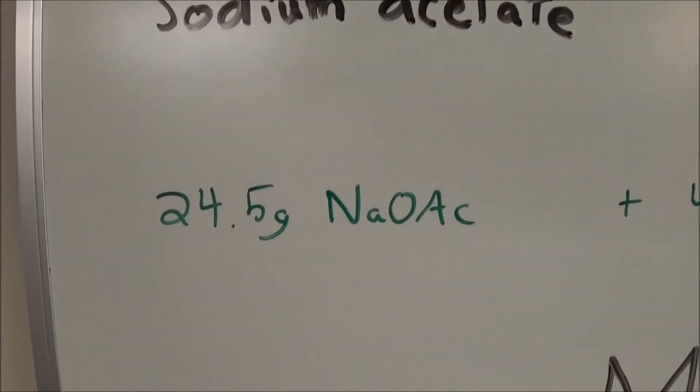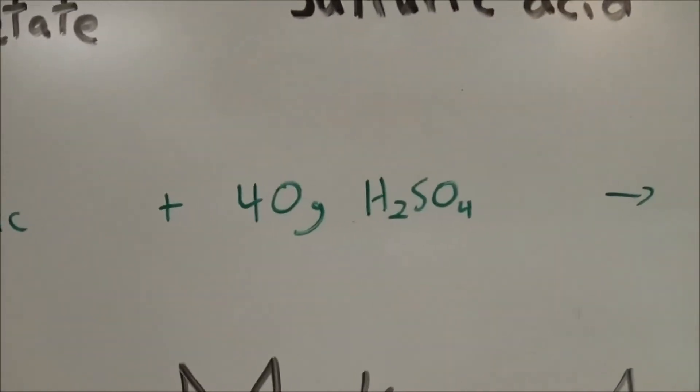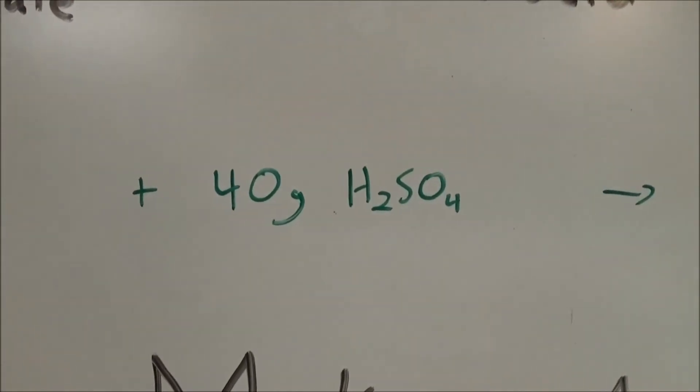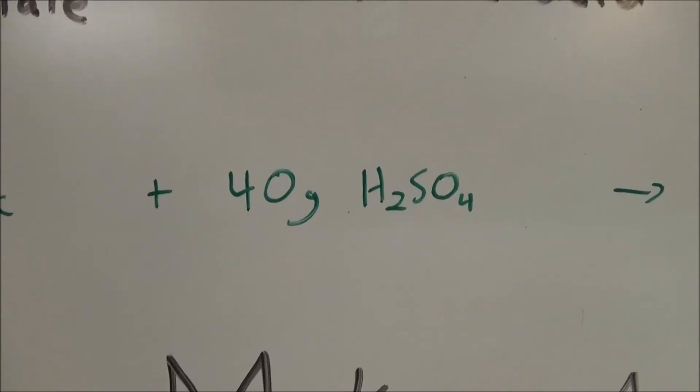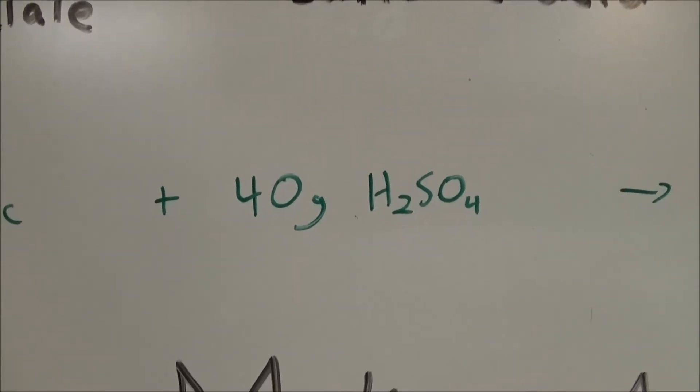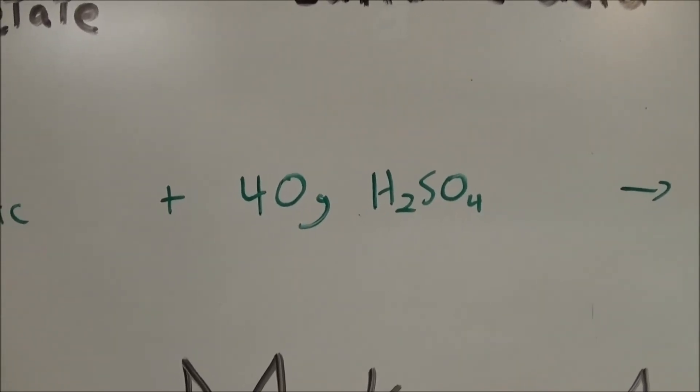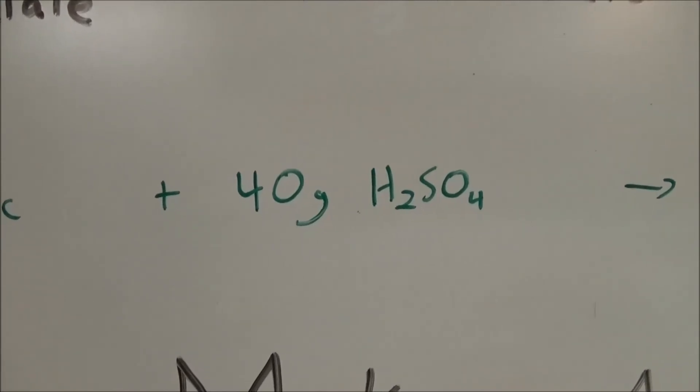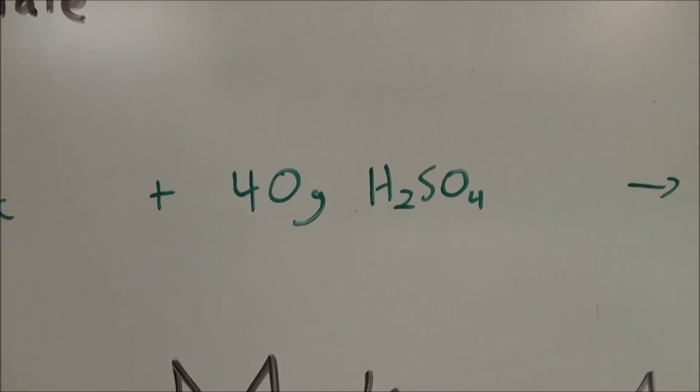I have 24.5 grams of sodium acetate and 40 grams of sulfuric acid. This is about a 30% excess of sulfuric acid, and this serves to dry the final acetic acid, because sulfuric acid has a strong affinity for water.